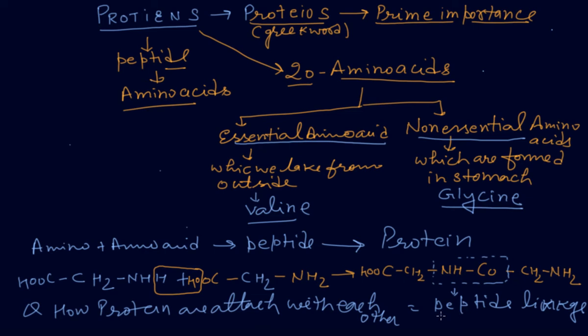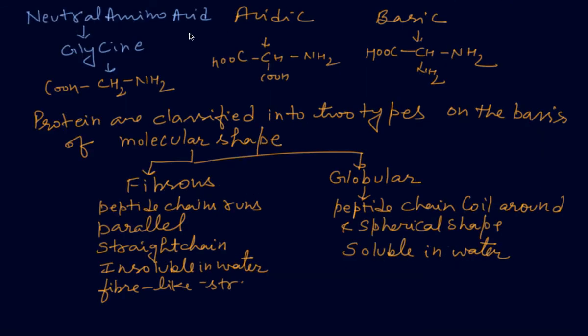One more classification of amino acid: amino acids are of three types. Number one is neutral amino acid, number two is acidic, number three is basic. In neutral amino acid, like glycine, acidic and basic parts are equal in ratio. In acidic amino acid, the acid part is greater, and in basic amino acid, the basic part is greater in ratio.